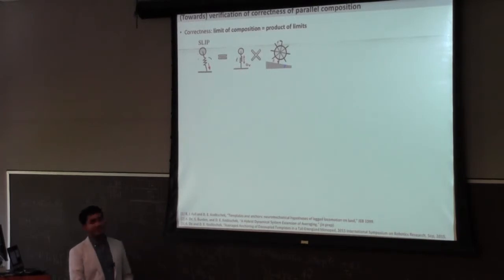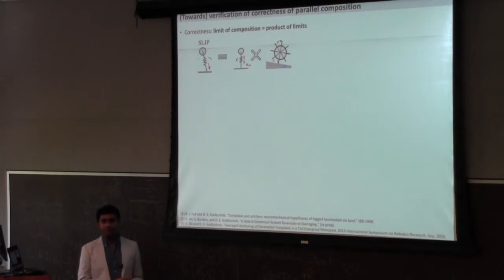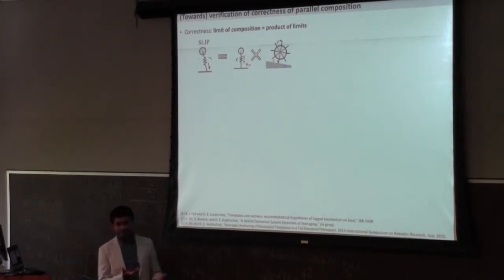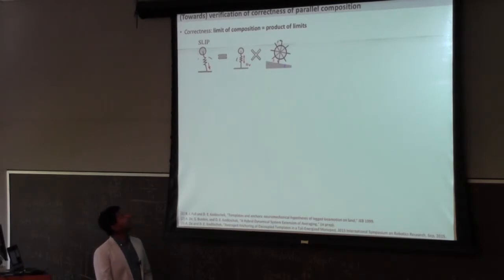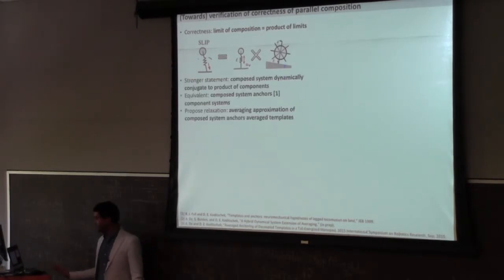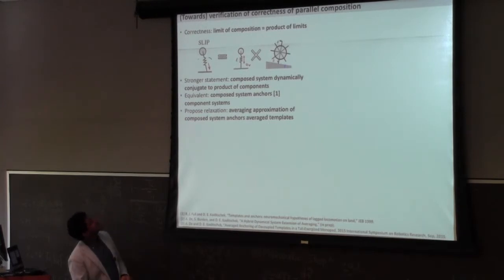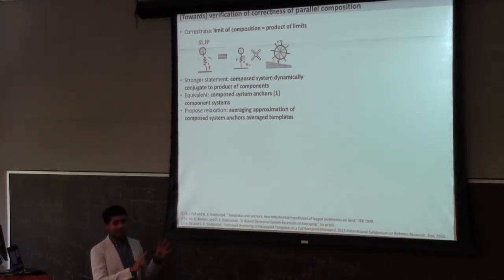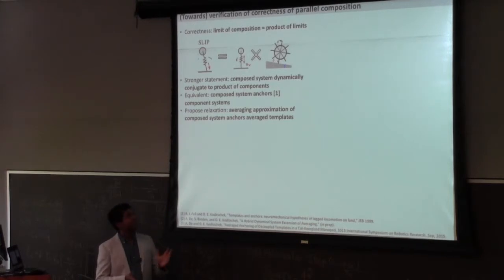Now the business end: when can you actually get this modularity? The correctness condition is that the limiting behavior of the composed system is the product of the limiting behaviors of the template systems. A stronger statement is that the composed system is dynamically conjugate to a diagonal cross product of the simpler systems. Both conditions are difficult to attain. The formulation of templates and anchors gets close — the composed system must anchor each template simultaneously — but this condition is hard to satisfy in practice.